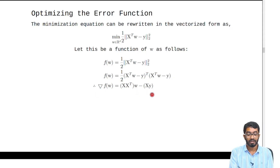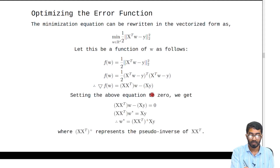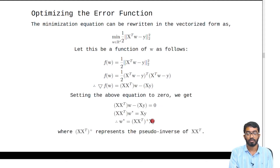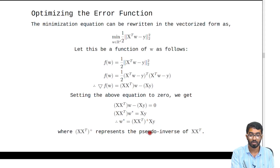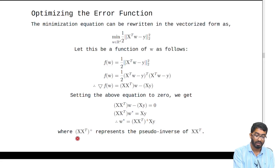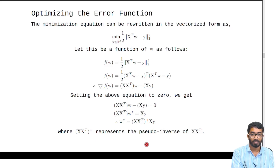Setting the gradient to 0, we get this equation, and solving for w, we finally get the solution to be w* equal to (XX^T)^{+} Xy, where this represents the pseudo-inverse of XX^T.